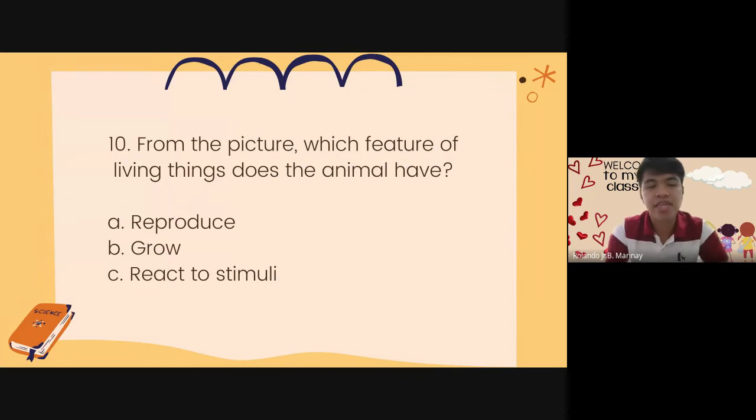Number 10. From the picture, which feature of living things does the animal have? You can see a finger touching a millipede. So, which feature of living things does the animal have? A. Reproduce. B. Grow. C. React to stimuli.